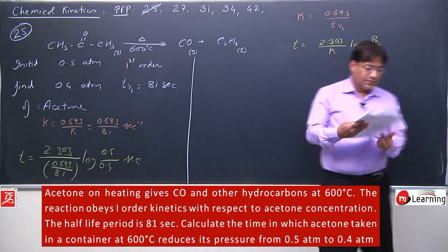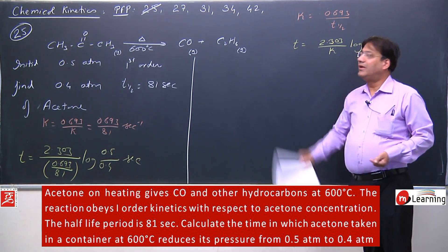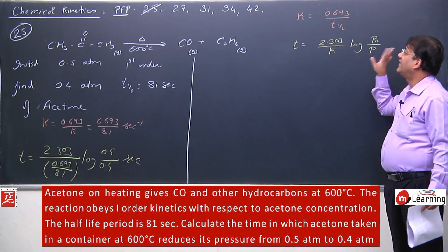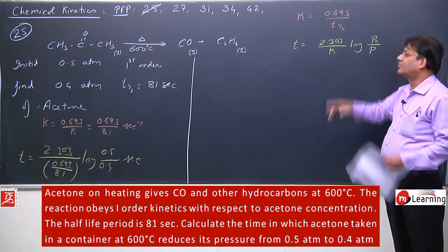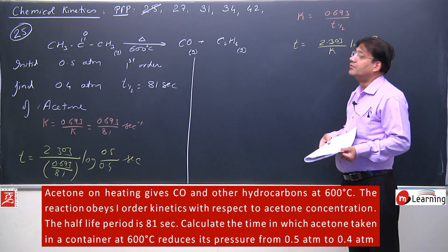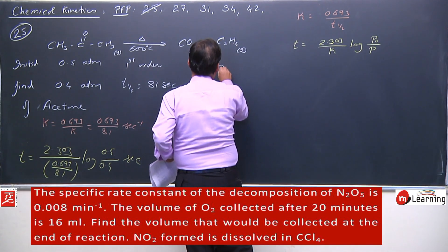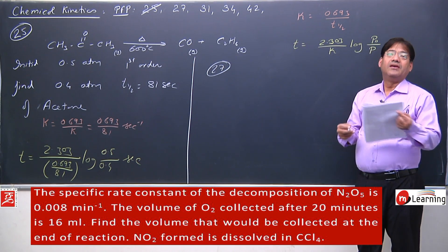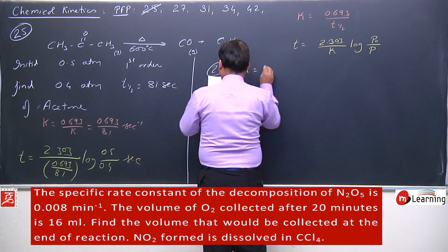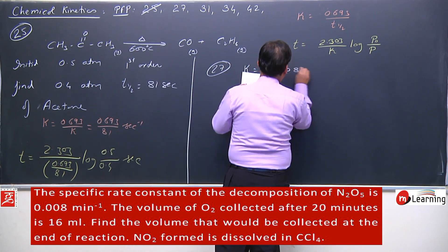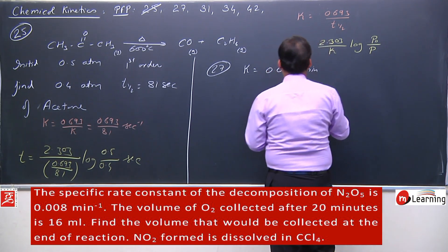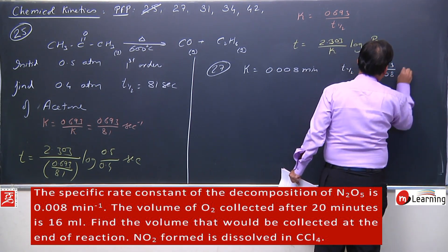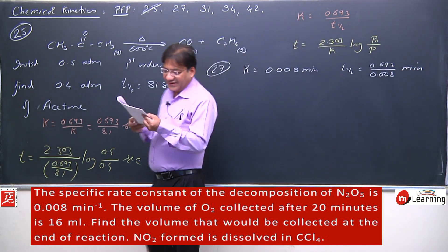Now let us solve the 27th problem. The specific rate constant for decomposition of N2O5 is 0.008 per minute. From this we can get the half-life: half-life = 0.693/0.008 minutes. This is for the decomposition of N2O5.